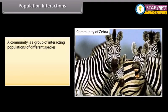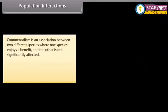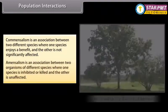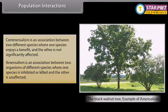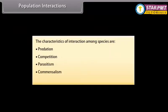A community is a group of interacting populations of different species. Populations interact with each other and their environment in a variety of ways; one primary interaction is due to feeding behavior. Commensalism is an association between two different species where one species enjoys a benefit and the other is not significantly affected. Amensalism is an association between two organisms of different species where one species is inhibited or killed and the other is unaffected. The characteristics of interaction among species are: predation, competition, parasitism, commensalism, and mutualism.